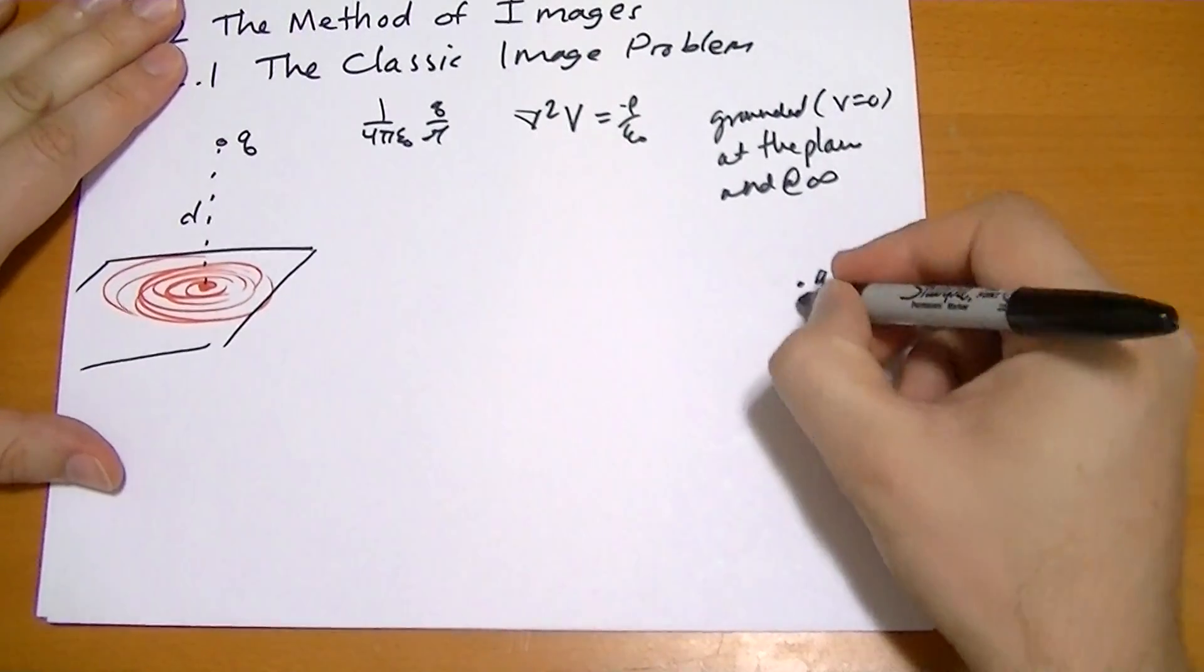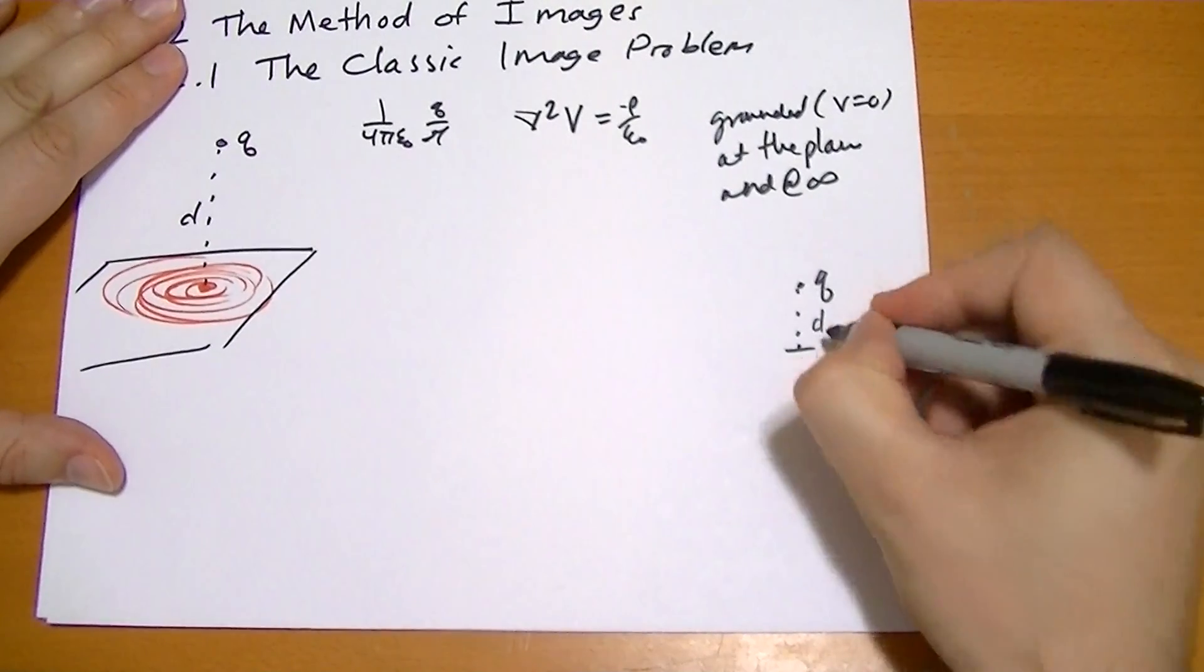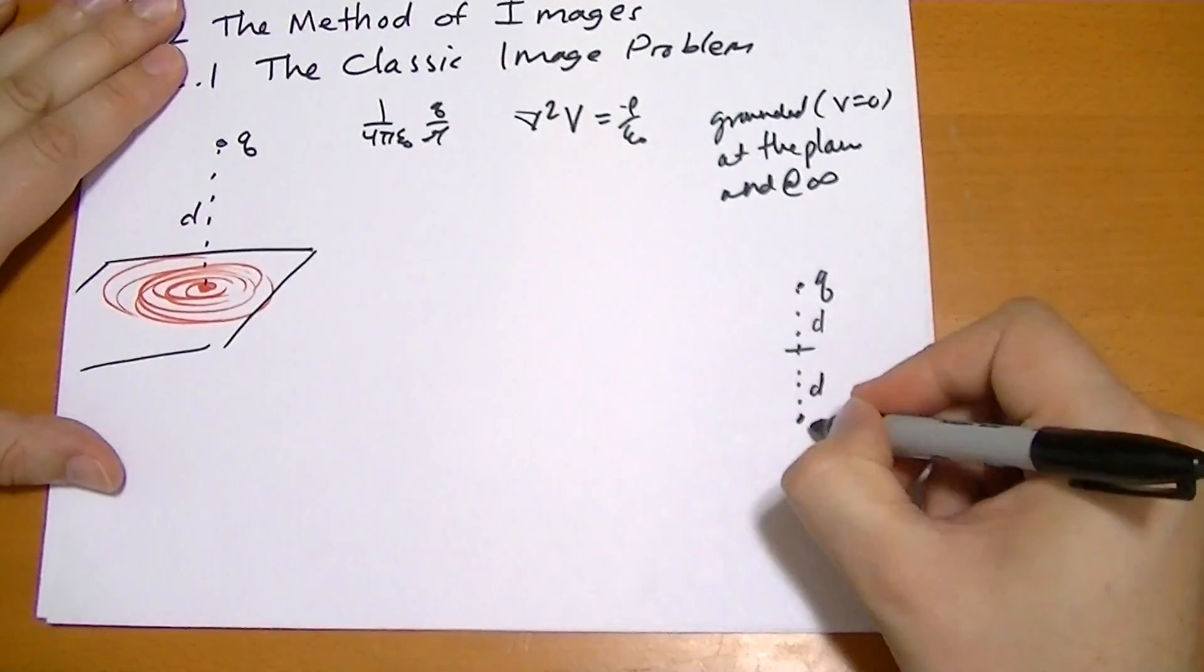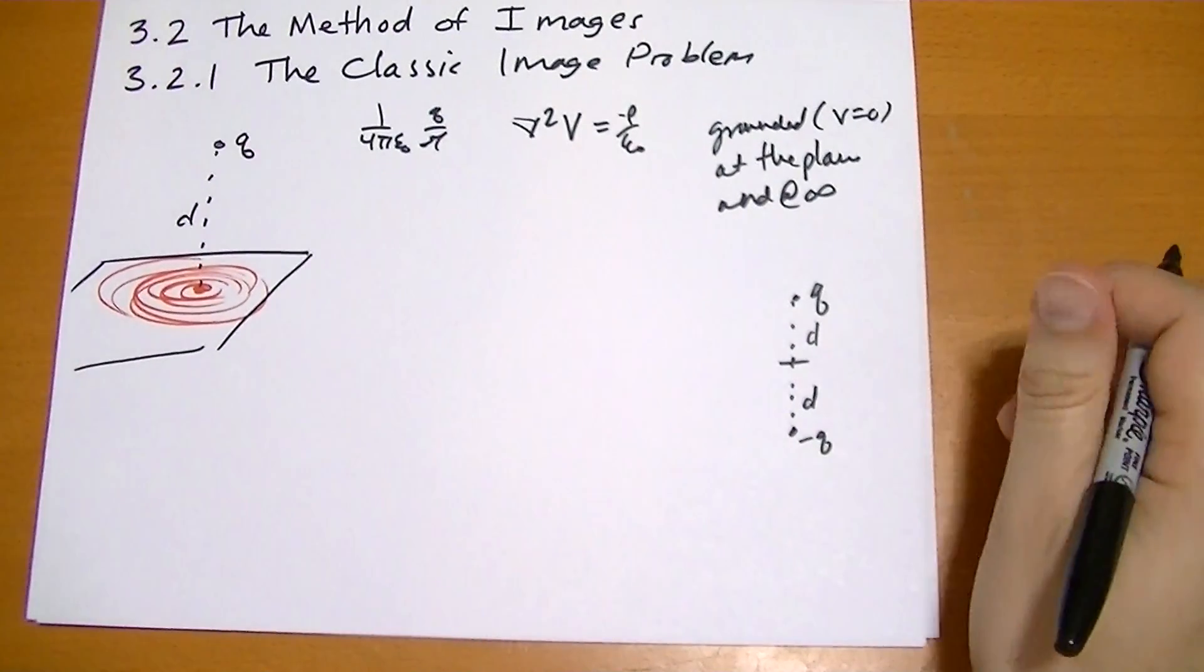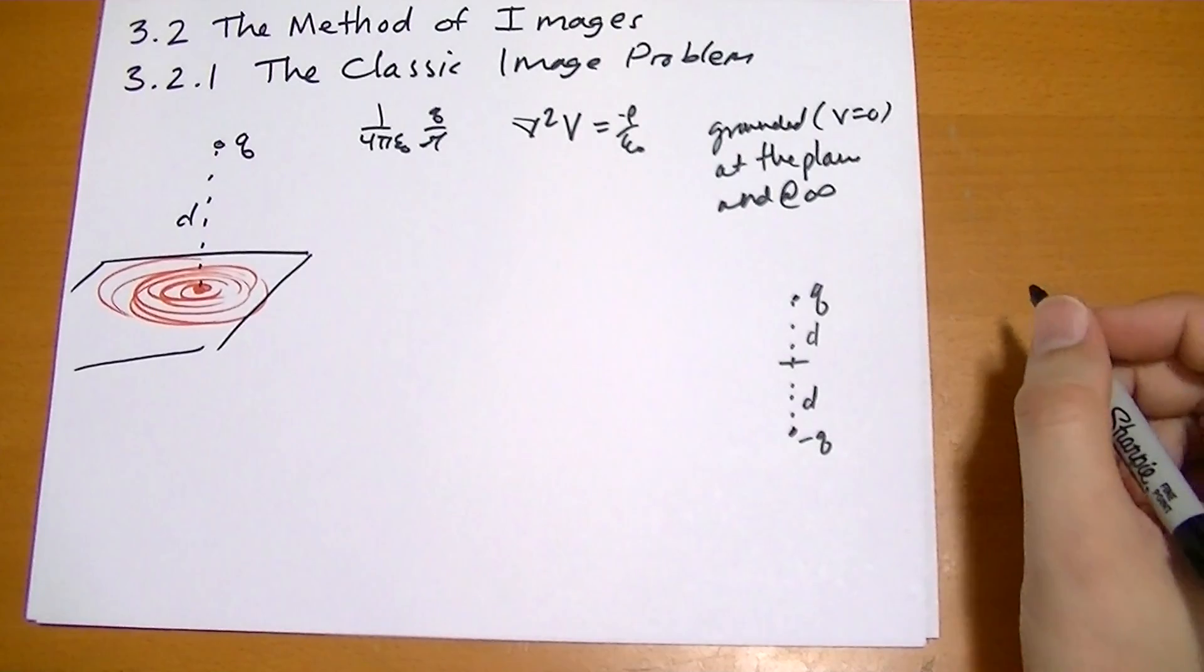We're going to pretend that we have a charge above the z-axis, a certain distance d, and then below that, at the distance d, we have a negative charge, equal and opposite. And, lo and behold, if you calculate the potential for this...